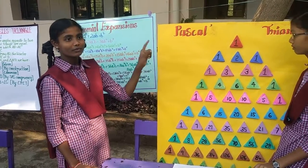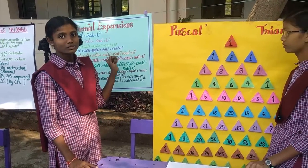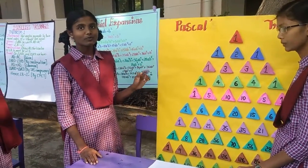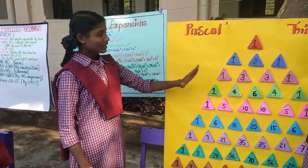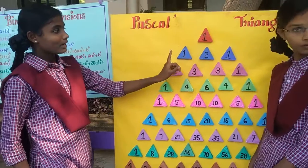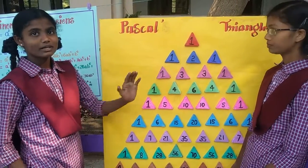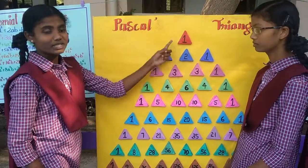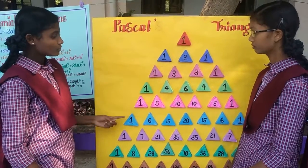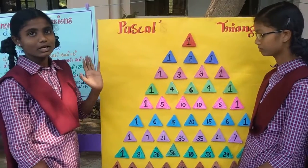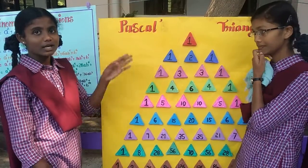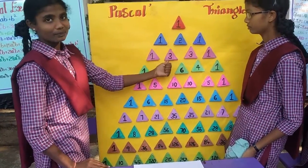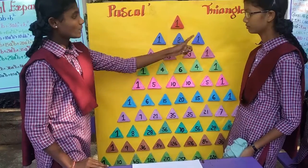Next we are going to the (A+B) whole cubed formula. Here we will add the (A+B) whole squared coefficients. Here 1 plus 2 is 3. These ones are the constant coefficients. So here 1 plus 2 is 3, then 2 plus 1 is 3.